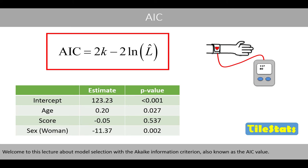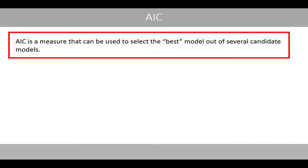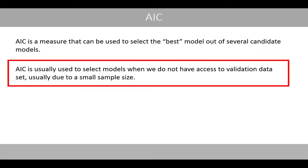Welcome to this lecture about model selection with the Akaike Information Criterion, also known as the AIC value. In this video we will see why we should not use model selection based on p-values or the R-squared value. Instead, we will see the strength of using the AIC value when selecting a model. AIC is a measure that can be used to select the best model out of several candidate models. AIC is usually used to select models when we do not have access to a validation dataset, usually due to a small sample size.